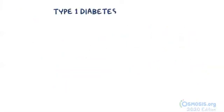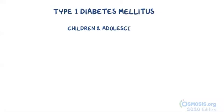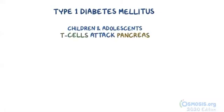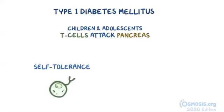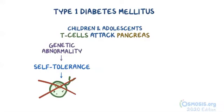Type 1 diabetes mellitus, which most commonly affects children and adolescents, arises when a person's own T-cells attack the pancreas. Normally, maturing T-cells in our body go through a process called self-tolerance, where the T-cells that would attack our own body are eliminated. In type 1 diabetes, there is a genetic abnormality which causes the loss of self-tolerance among T-cells that target the beta cells.